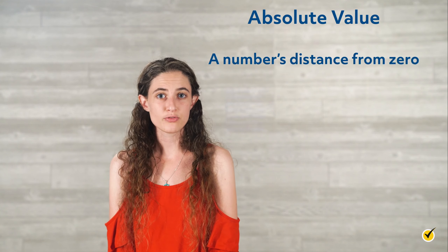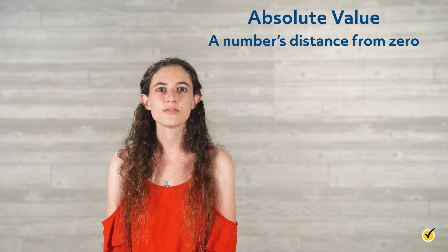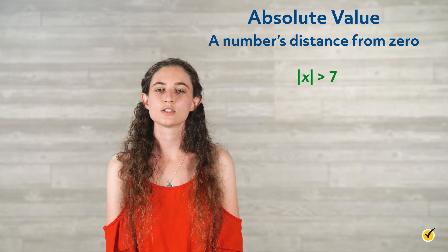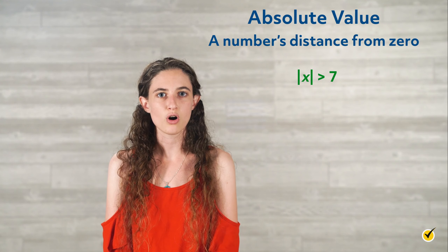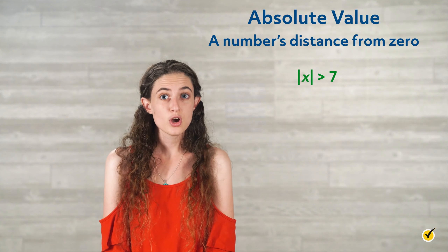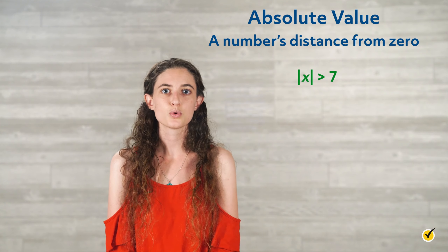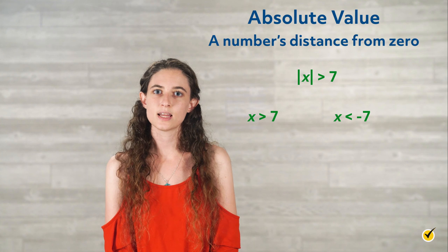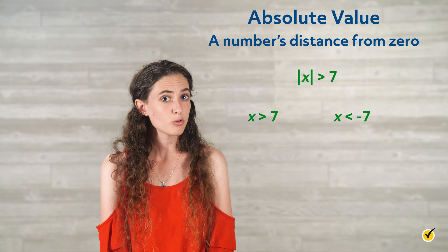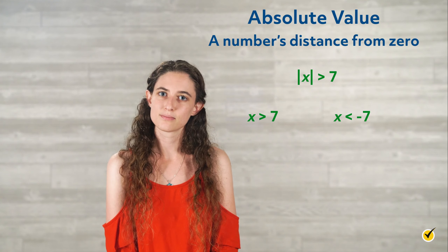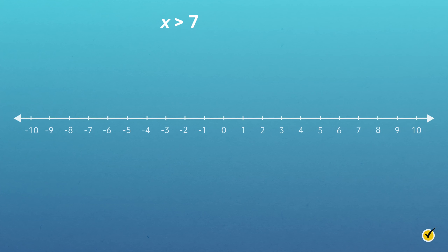Solutions to inequalities with absolute value can also be graphed on a number line. Recall that the absolute value is a number's distance from 0 — it's the non-negative value of a number. Consider the inequality where the absolute value of x is greater than 7. Solutions for x include all numbers that are more than 7 spaces away from 0 on the number line. Because possible solutions can be positive or negative, we can rewrite this as two inequalities without absolute value bars: x is greater than 7 and x is less than negative 7. Notice that the sign flipped in the second inequality, because when a negative is multiplied or divided in an inequality, its sign flips.